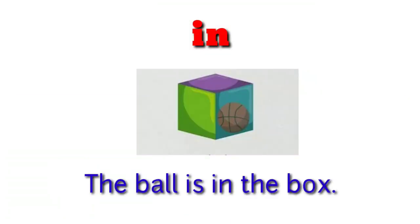In. The ball is in the box. Here, the object is inside an enclosed surface — that is, a surface covered on multiple sides. When an object is inside an enclosed surface, we use the preposition 'in'.